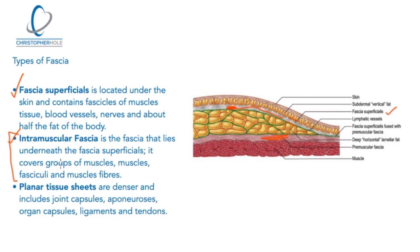The next type of fascia is planar tissue sheets. These are denser and include joint capsules, aponeuroses, organ capsules, ligaments, and tendons. All these different types of connective tissue are included within the movement system, and even organ capsules have an effect on it. However, in these lessons we're going to focus more on intramuscular fascia and the different concepts that branch out from it.